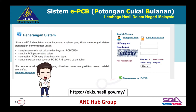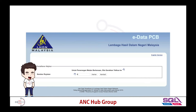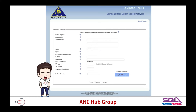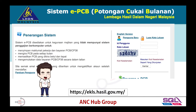Let's jump into the PCB portal. Go to ekls.hasil.gov.my. If you are a new user, click on 'Pengguna Baru' for new registration. They'll ask you to put in your e-number, then fill up the form with your name and addresses. Click send. Once completed, they will send you a confirmation email and you just need to verify the email.